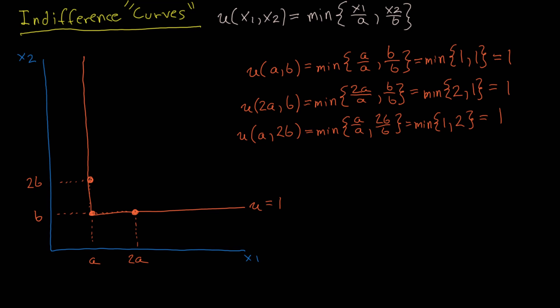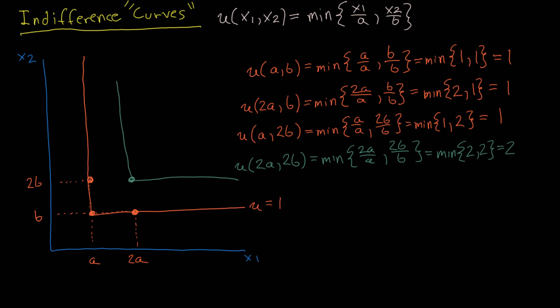What would happen if we doubled the quantity of both goods — so 2a and 2b? Evaluating the utility function: the minimum between 2a over a and 2b over b is just the minimum between 2 and 2, which gives a utility equal to 2. So doubling both goods actually gives us double the utility. Using the same logic as before, we end up with this L-shaped indifference curve where the utility for all bundles on that curve is equal to 2.